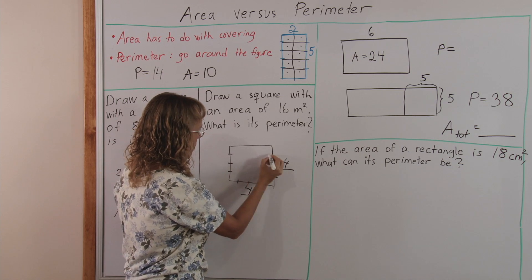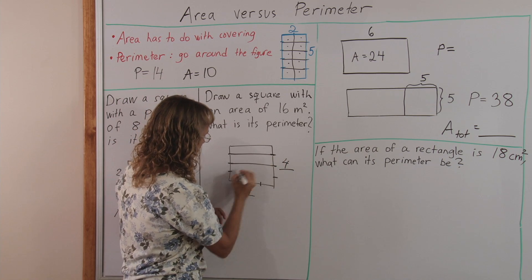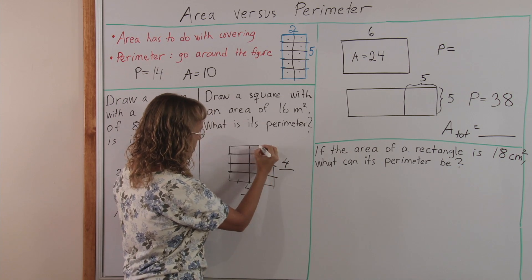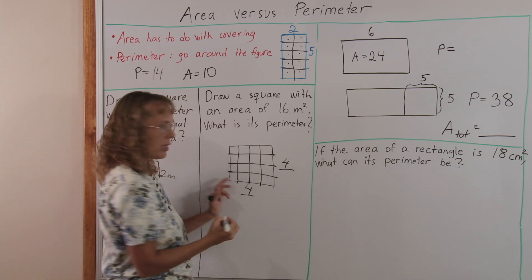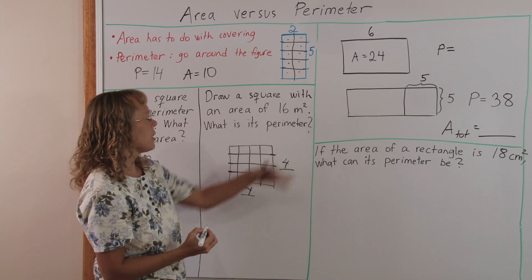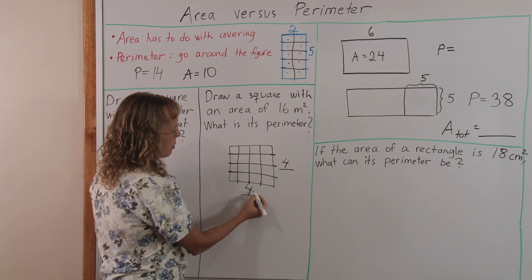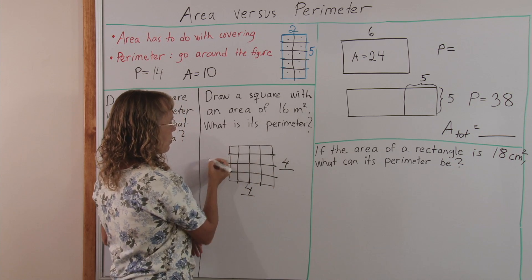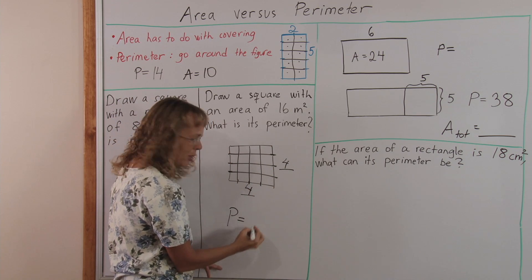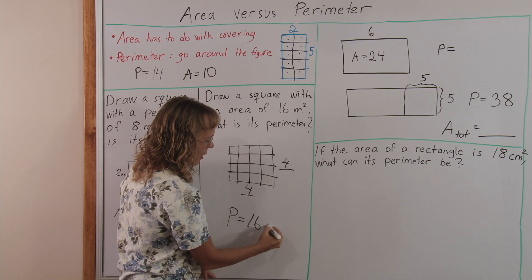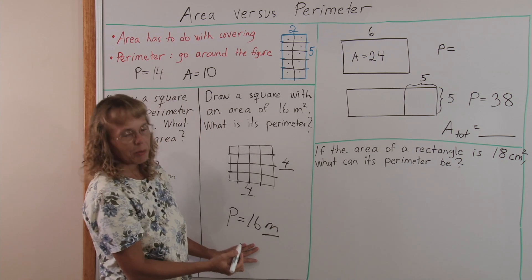Again you can draw the grid to see that there indeed are now sixteen squares inside, sixteen square meters. And now the perimeter is four plus four plus four plus four. Well, how interesting, the perimeter is also sixteen, but meters, not square meters.